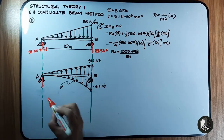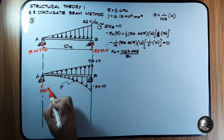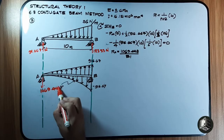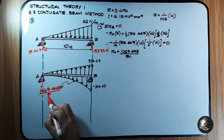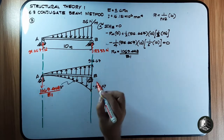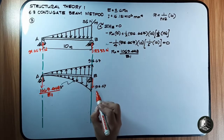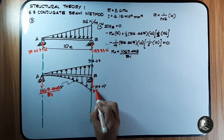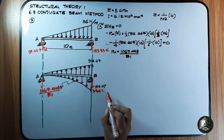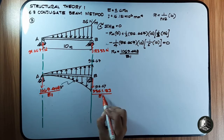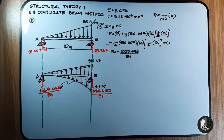That is how you solve for the reaction. Ra = 1069.448/EI (upward), and the reaction at B is downward at 1361.123/EI.